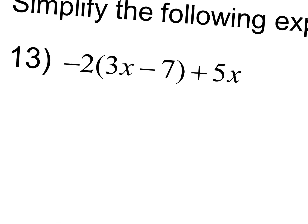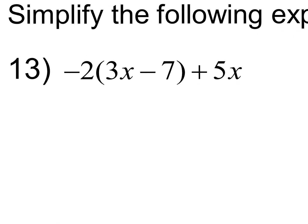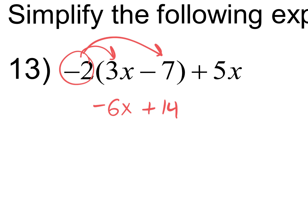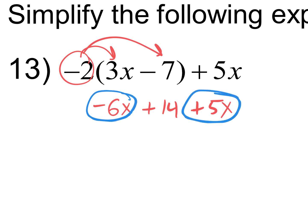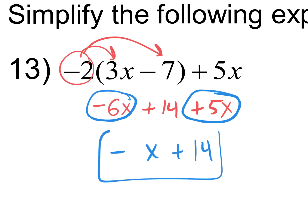Looking at number 13, we're going to distribute first: negative two times three x is negative six x, and negative two times negative seven is positive 14. Then bring down the plus five x. Combining like terms: negative six x plus positive five x — if you owe six and have five, you still owe one x. Bring down the plus 14. The final answer is negative x plus 14.